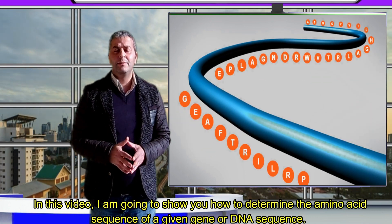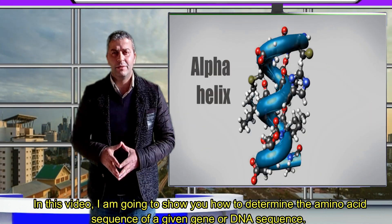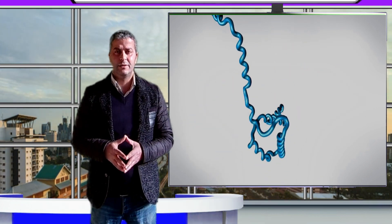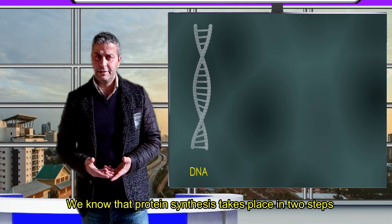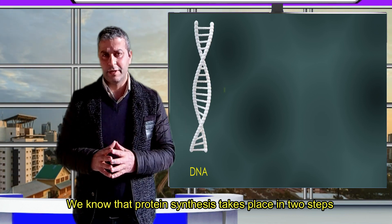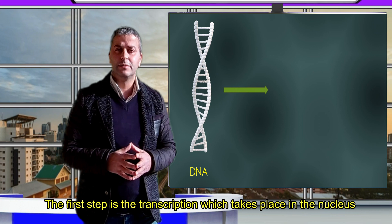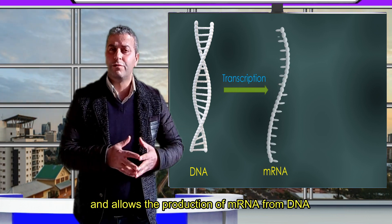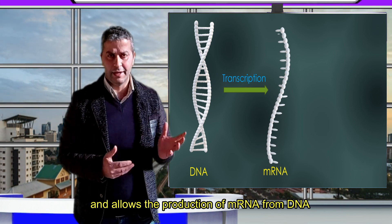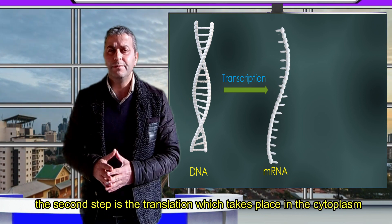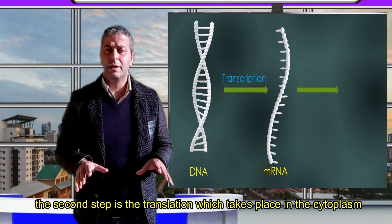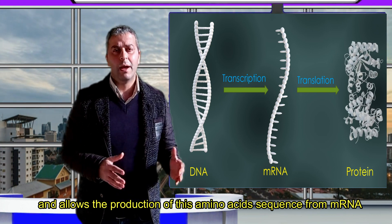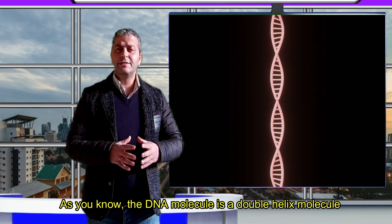Salam alaikum. In this video I'm going to show you how to determine the amino acid sequence of a given gene or DNA sequence. We know that protein synthesis takes place in two steps: the first step is transcription, which takes place in the nucleus and allows the production of messenger RNA from DNA. The second step is translation, which takes place in the cytoplasm and allows the production of the amino acid sequence from mRNA.